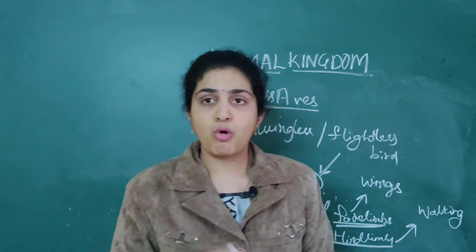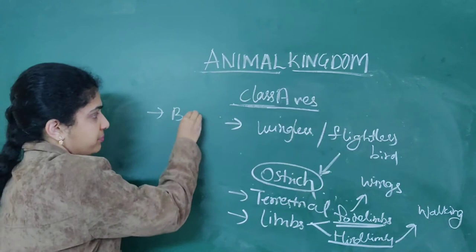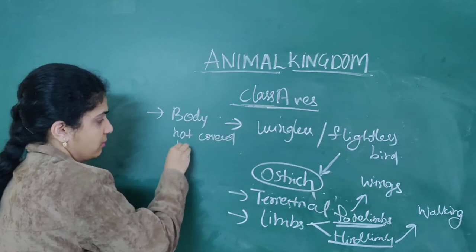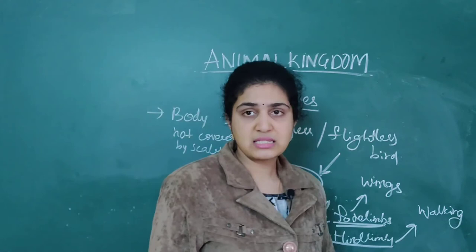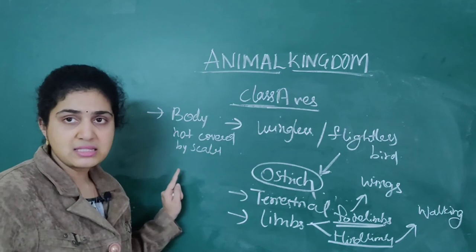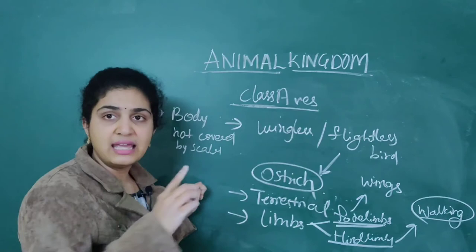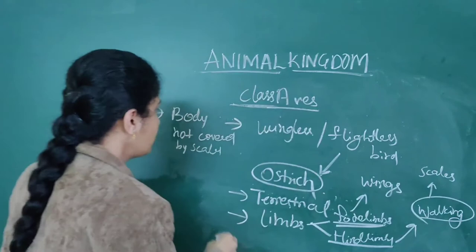Regarding the body covering — the body of birds is not covered by scales. However, there is one exception: only in the hind limbs is the body covered by scales. So: body not covered by scales overall, though the body is dry. Only reptiles are fully covered by scales. For Aves — birds — only the hind limbs have scales, as they are used for walking.